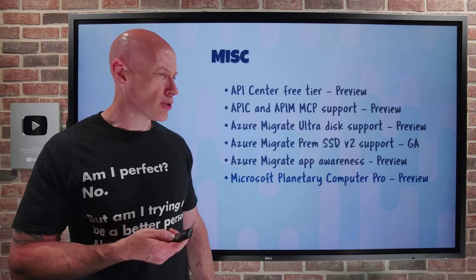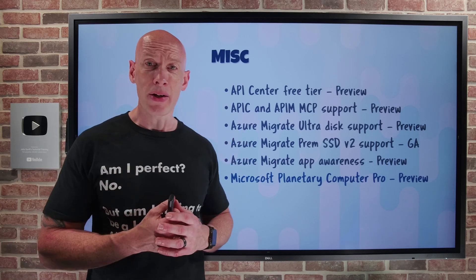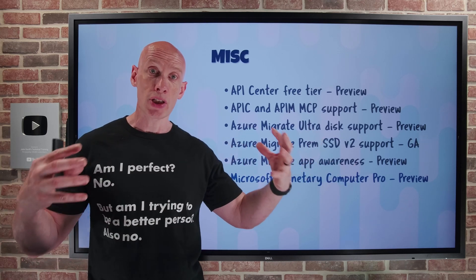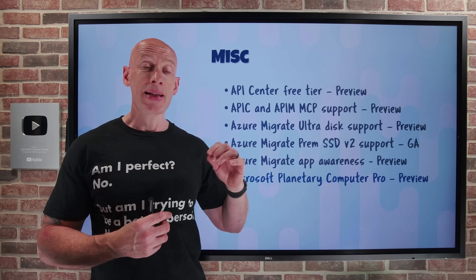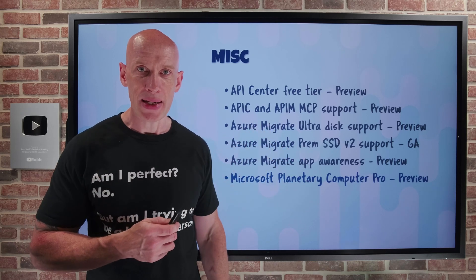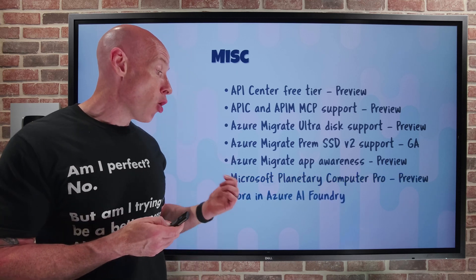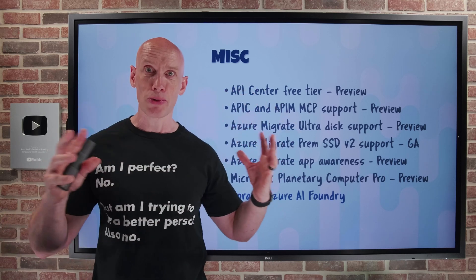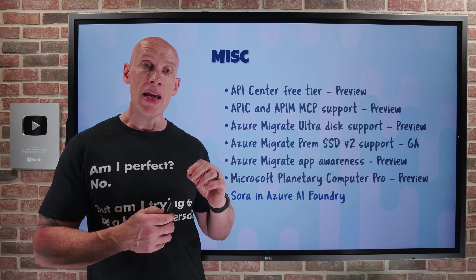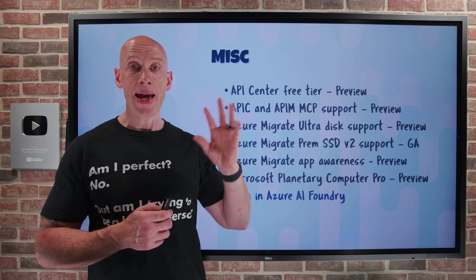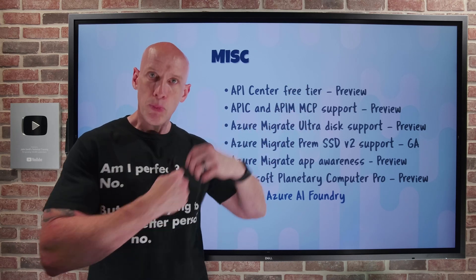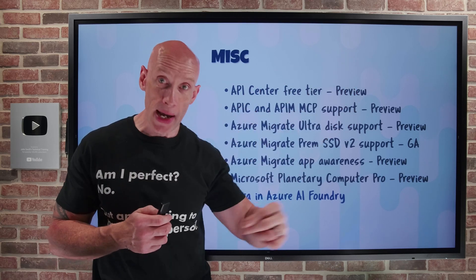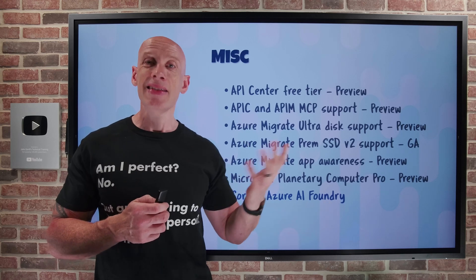Microsoft Planetary Computer Pro is in preview — it's a geospatial data platform. You ingest geospatial and location-based datasets, which then enables you to work and act on that location-based data. Also, the OpenAI Sora model is now available in Azure AI Foundry. Sora generates videos, and I can now use it in the new video playground and via the API. In the video playground, I can deploy a Sora model, play around with it, view the code, and recreate what I've built via the API.